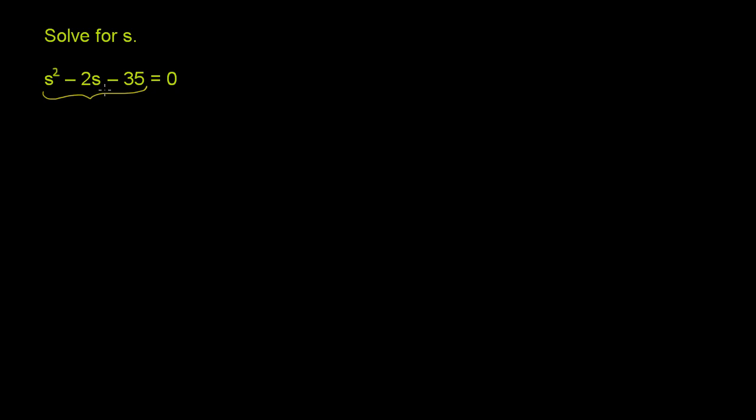So let's factor this thing on the left. s squared minus 2s minus 35. So what we want to do is look for two numbers whose sum is negative 2. So we want to look for a plus b whose sum is equal to negative 2 and whose product is negative 35. So a times b is equal to negative 35. And since the product is negative, we know that they have to be of different signs.